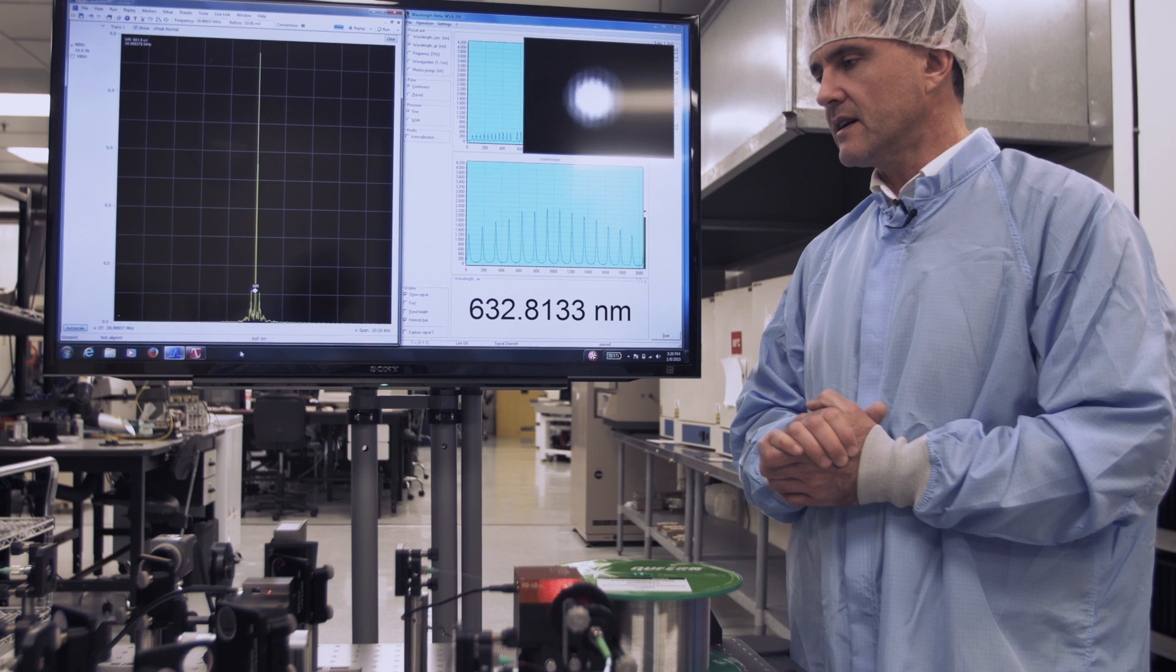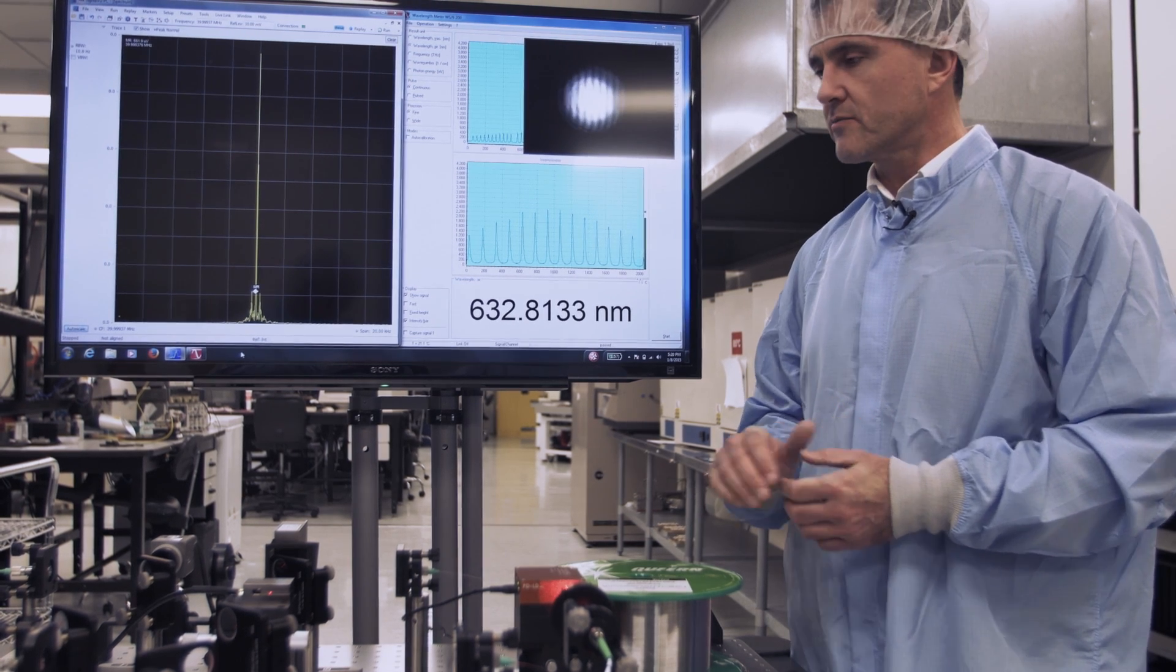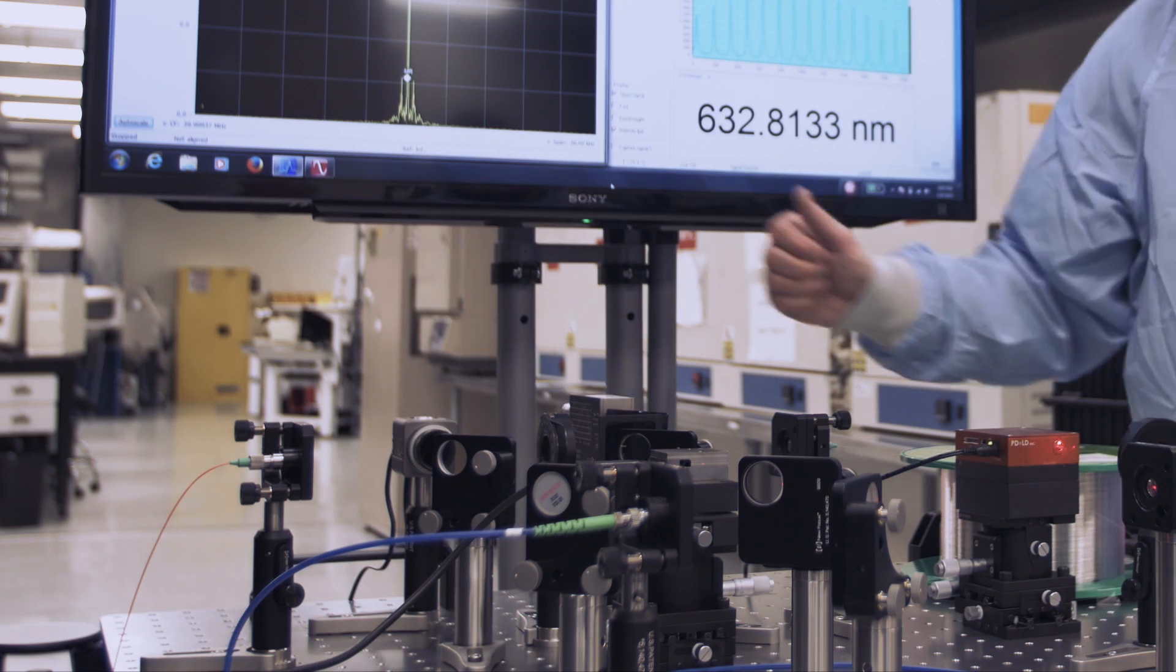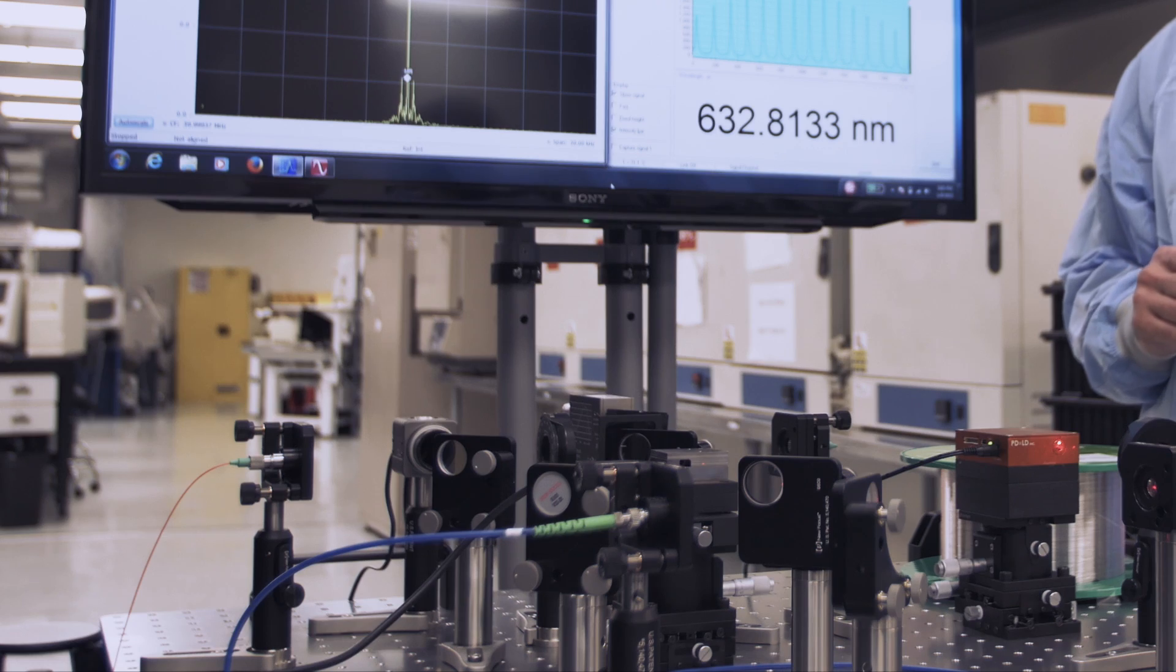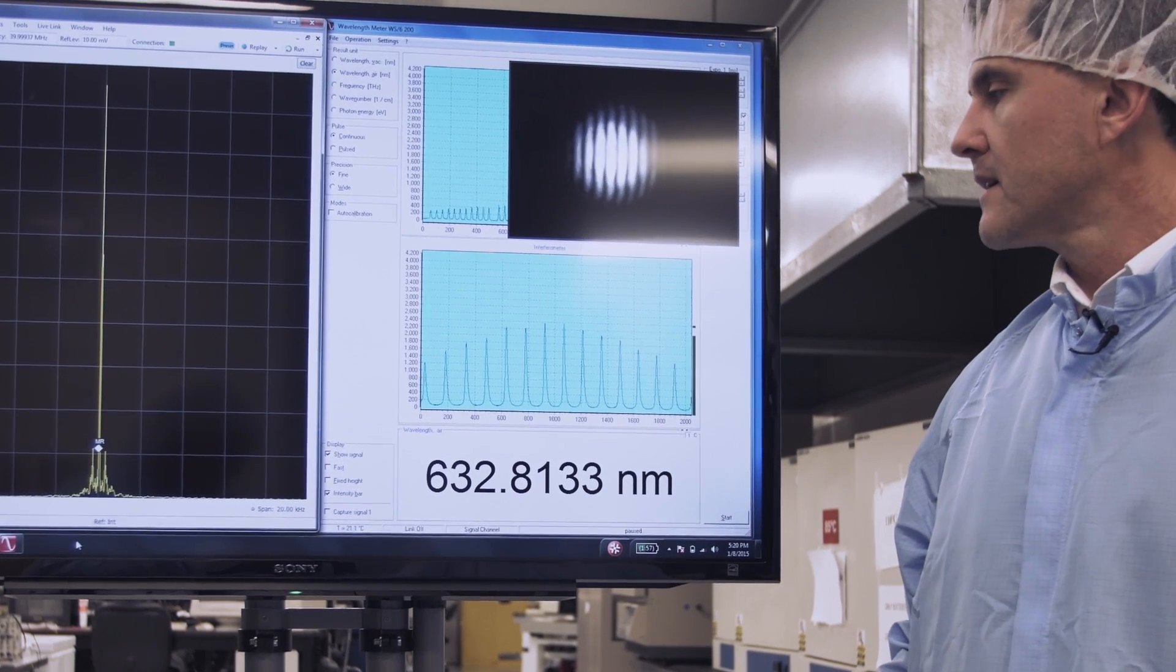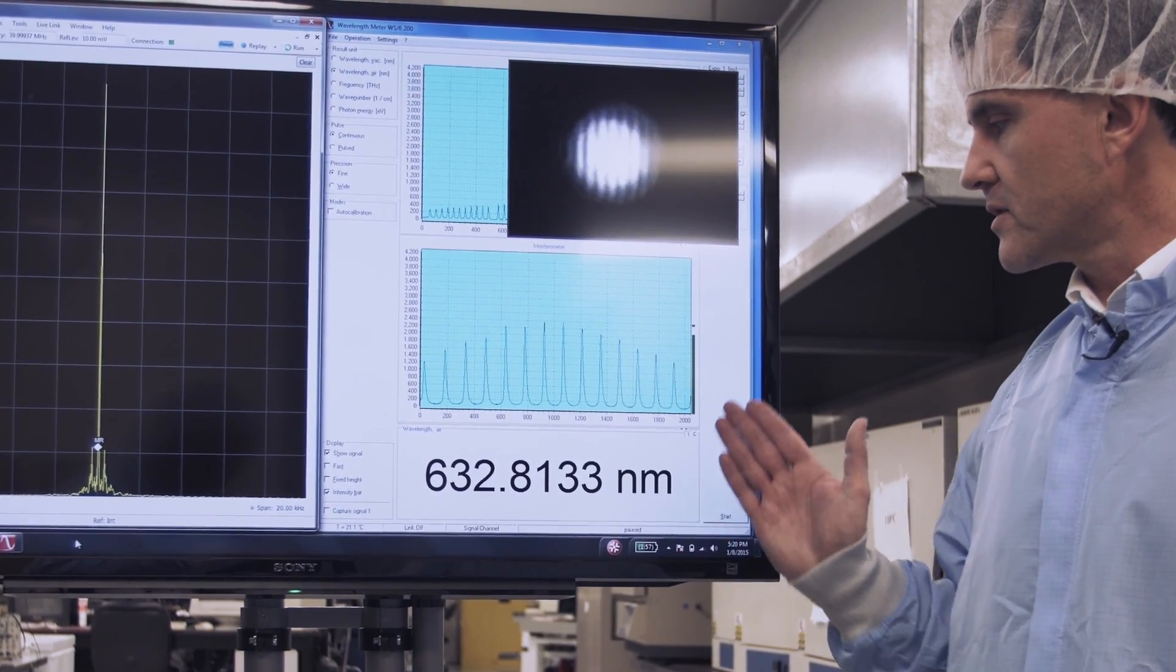Lastly, the absolute wavelength of the laser is measured by coupling into a single-mode fiber over here, and then feeding into a wavelength meter. The result of this measurement is shown in this window.